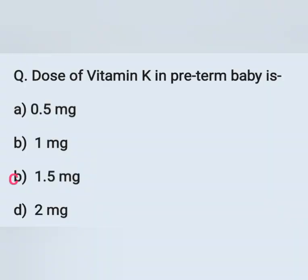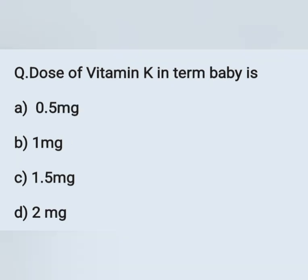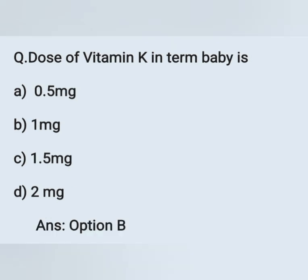Dose of vitamin K in preterm babies: Option A: 0.5 mg. Option B: 1 mg. Option C: 1.5 mg. Option D: 2 mg. The dose of vitamin K in preterm babies is 0.5 mg. Vitamin K is given IM only. The dose of vitamin K in term babies: Option A: 0.5 mg. Option B: 1 mg. Option C: 1.5 mg. Option D: 2 mg. For term babies, the correct answer is 1 mg (Option B). For preterm babies, it is 0.5 mg.